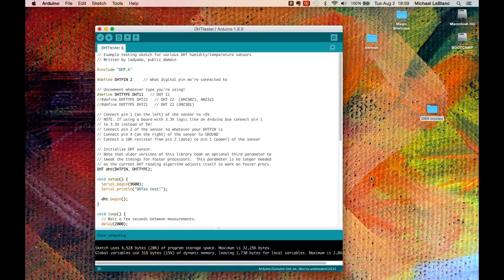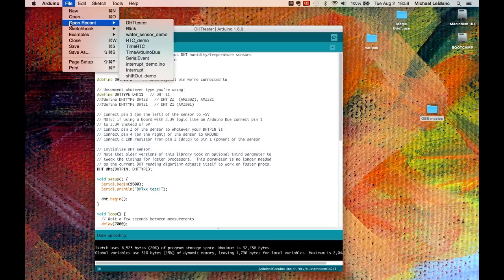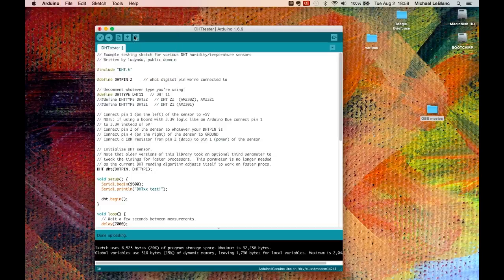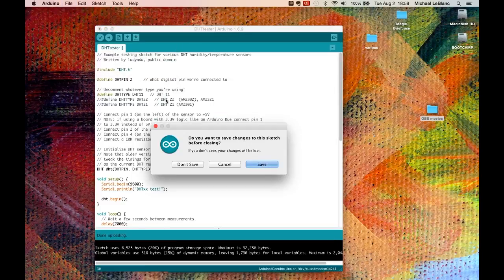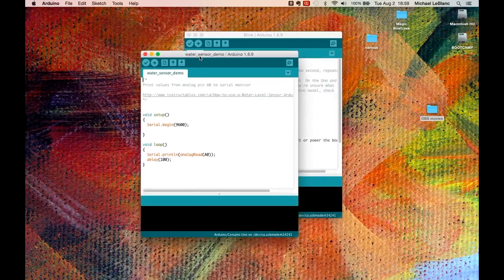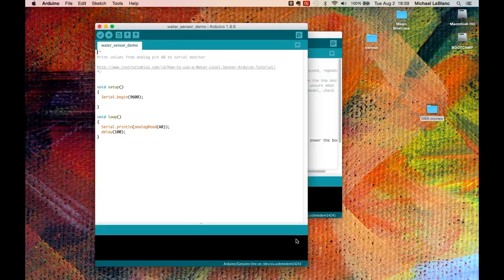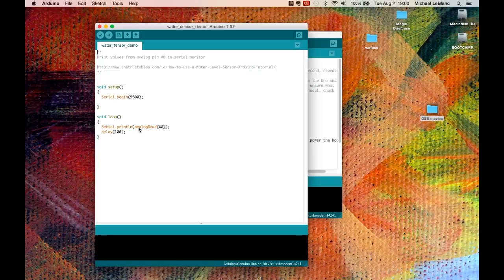The sketch just sets the serial port. And it does one command to the DHT library to begin. And then it reads humidity and temperature. And then sends it out by means of the serial monitor. So that's the DHT 11 unit. The next sensor we're going to look at is the water sensor. And the sketch is water sensor demo. And this is extremely simple. This is just a setup. And then within the loop, we're analog reading analog pin zero and delaying 100 milliseconds. There's no setup involved in setting it up to read analog. The pins are already set to read analog. They're only input only, the analog pins.